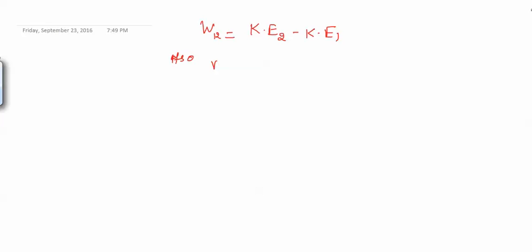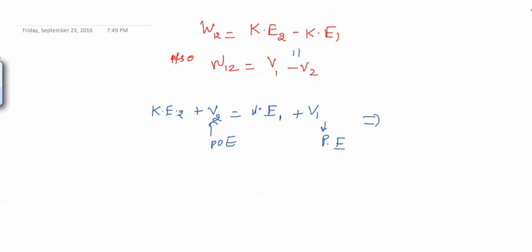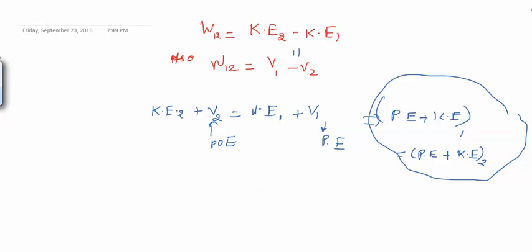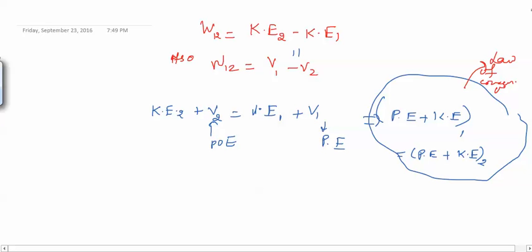We have obtained that W₁₂ equals kinetic energy at 2 minus kinetic energy at 1, and also that W₁₂ equals V₁ minus V₂, where V is the potential energy. So these two are equal, giving us: kinetic energy at position 2 plus V₂ equals kinetic energy at position 1 plus V₁. This is the law of conservation of energy: potential energy and kinetic energy interchange among themselves, and their sum remains constant.